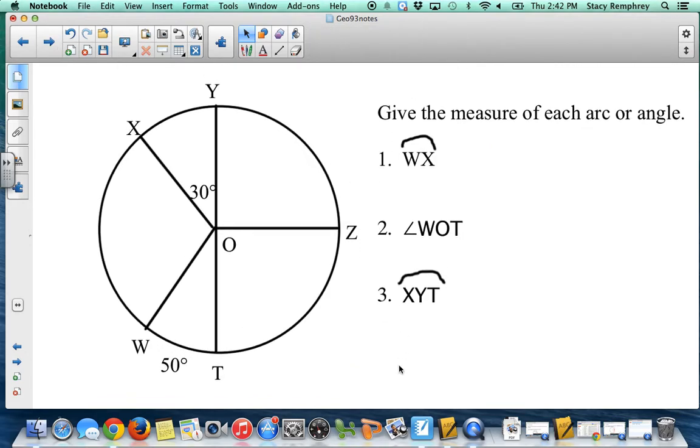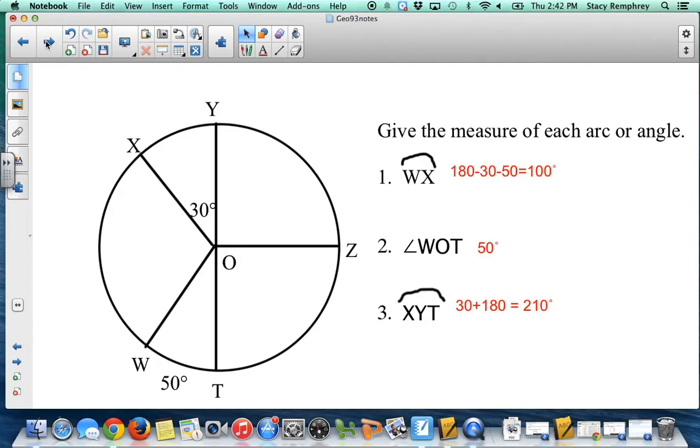You can work through this one in a similar way. It is circle O with O at the center. So push pause, work through. Okay, and these are the answers. You can see my work. I don't think this is too terribly bad. I used that this was in a semicircle and subtracted the two angles. If this central angle is 30, that means this arc is also 30. So that's where the other 30 came from. WOT, angle WOT is 50. It's a central angle. And XYT, I used the arc addition postulate.